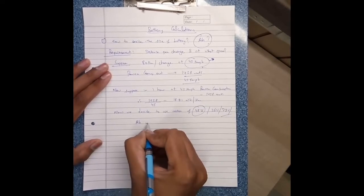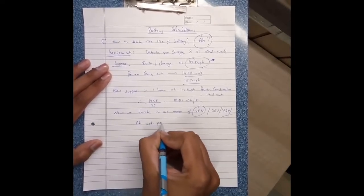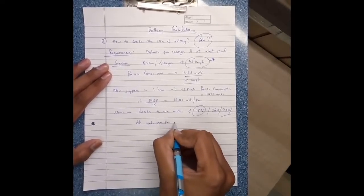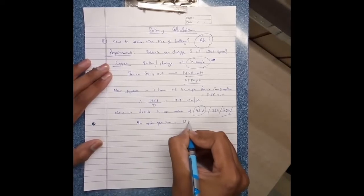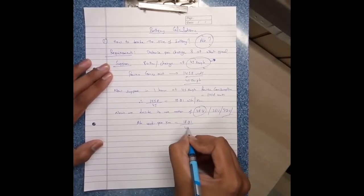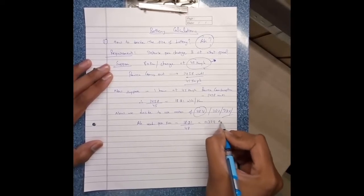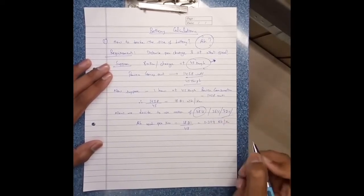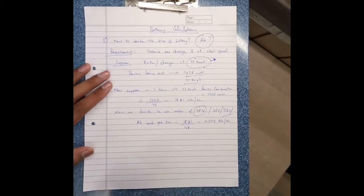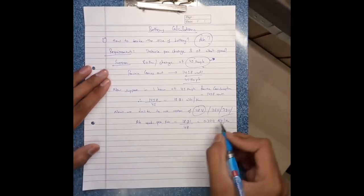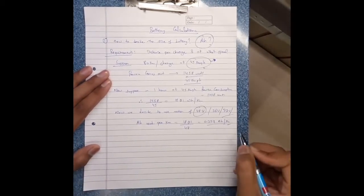Ampere used per kilometer equals to 18.21 divided by 48 equals to 0.379 ampere per kilometer.